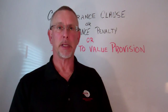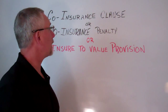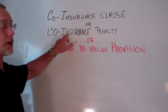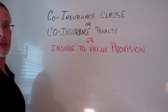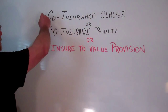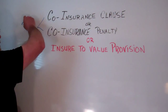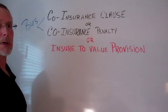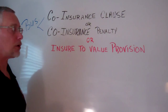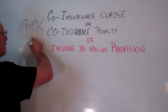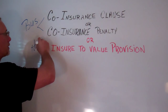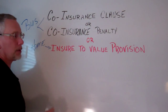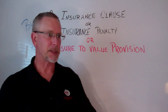Co-insurance goes by several names: the co-insurance clause or the co-insurance penalty. This generally refers to business policies, and the same term when referring to a homeowners policy is called insurance to value. They both mean relatively the same thing.